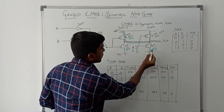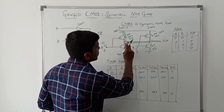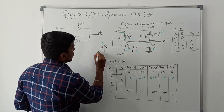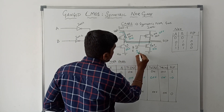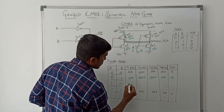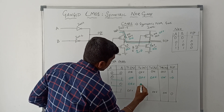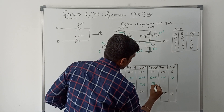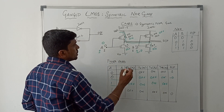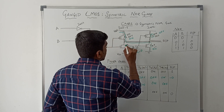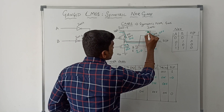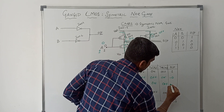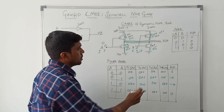T1 transistor on and T4 transistor on, so VDD is connected to ground through transistors T1 and T4. Next, for input A=1, B=0: T1 transistor is off, T2 transistor on. Since B=0, T3 transistor is on, T4 transistor is off. VDD is connected to ground through T3 and T2 transistors. Output of this circuit is zero. Both outputs match the truth table.